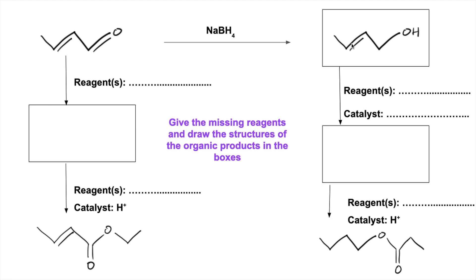And then if we look at the overall change, going to the very bottom we've generated an ester and we've lost this carbon-carbon double bond. Now there's another clue as to the order of this — this acid catalyst ties in with the esterification reaction. So the first thing we'll do is get rid of that double bond, so we're going to hydrogenate the alkene group. We're going to react it with hydrogen in the presence of a nickel catalyst and that's going to generate that alcohol.